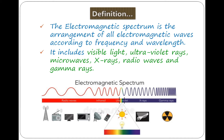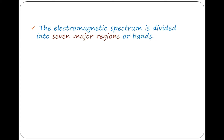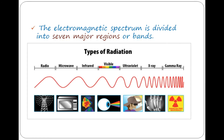The electromagnetic spectrum is the arrangement of all electromagnetic waves according to frequency and wavelength. It is basically divided into seven major bands. From one end: radio waves, microwaves, infrared, visible light, ultraviolet, X-rays, and gamma rays — seven major divisions of the electromagnetic spectrum.